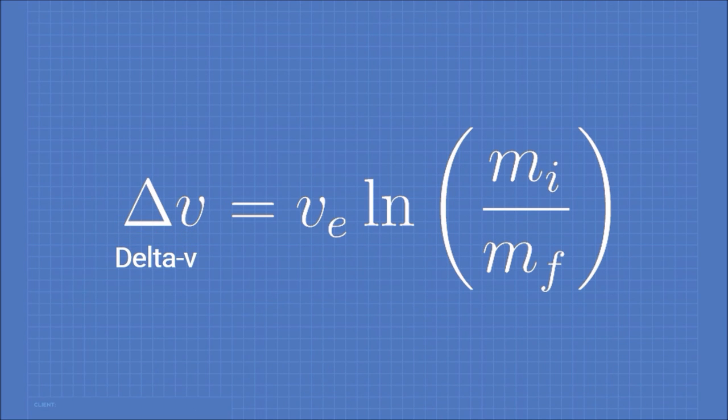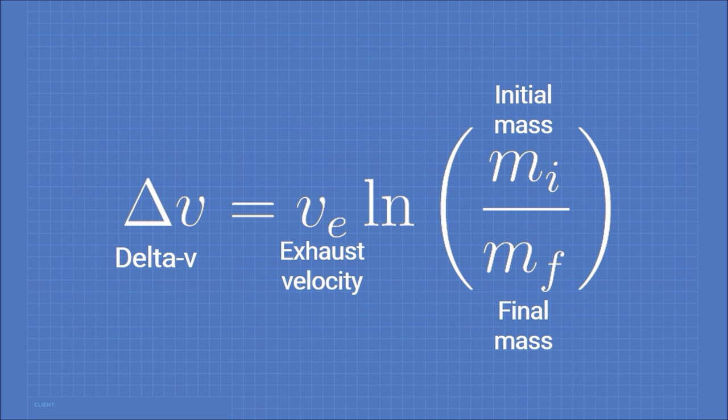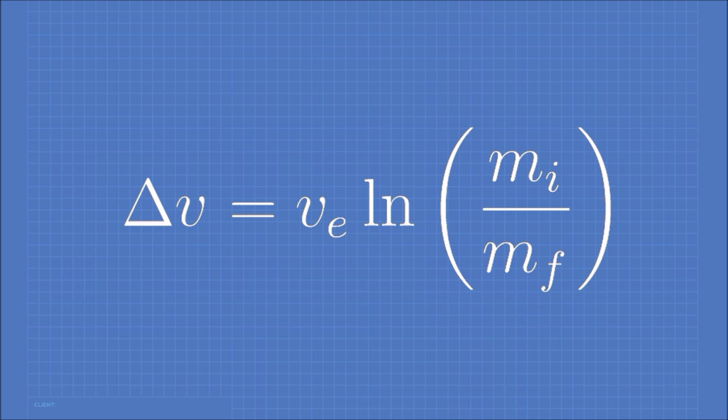It tells us the change in velocity the rocket can make. On the other side, we have exhaust velocity, which is how fast the propellant is expelled backwards relative to the rocket. m_i, standing for initial mass, is the total mass of the rocket before firing the engine. m_f, standing for final mass, is the total mass of the rocket after firing the engine.